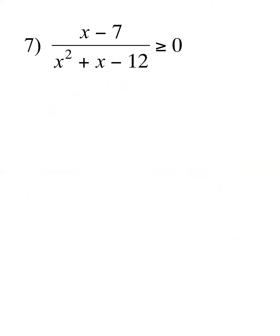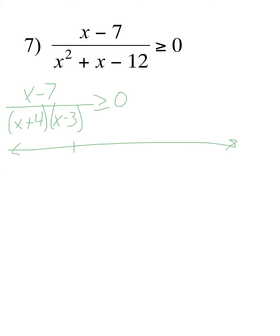For number 7: the numerator stays as (x - 7). The denominator factors into (x + 4)(x - 3). Three critical values: x = -4, x = 3, and x = 7. I cannot have -4 or 3 (zeros in the denominator). Plugging in x = 7 gives zero in the numerator — is 0 ≥ 0? Yes it is, so I can include 7 (closed circle). This inequality asks for greater than or equal to zero.